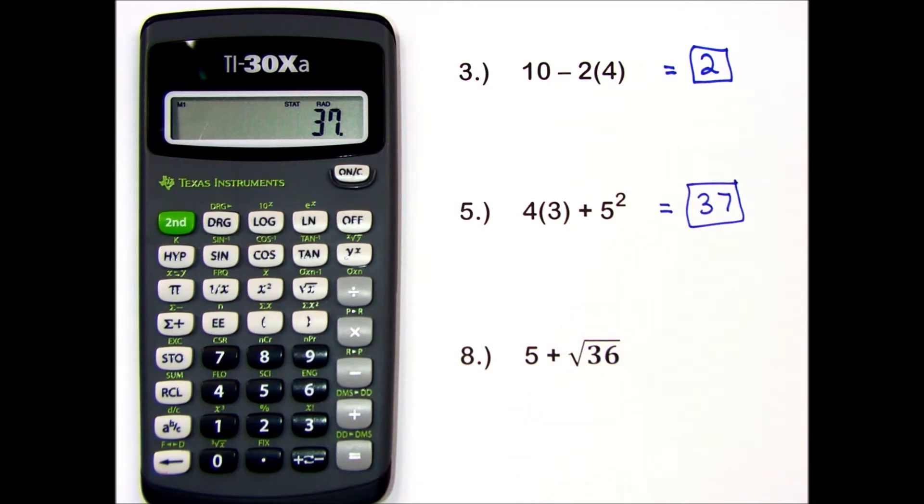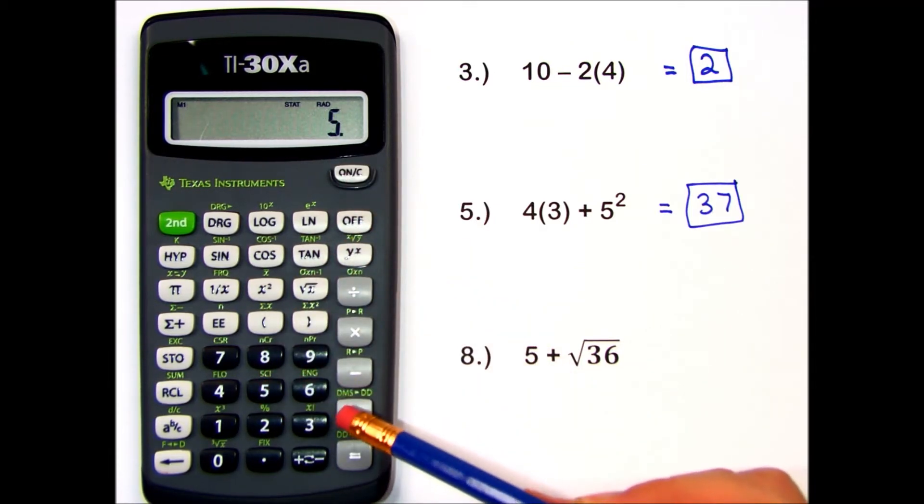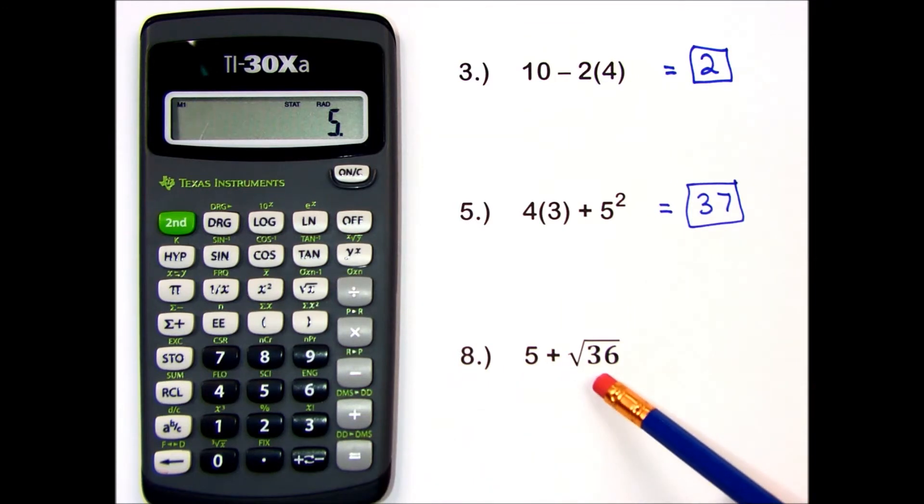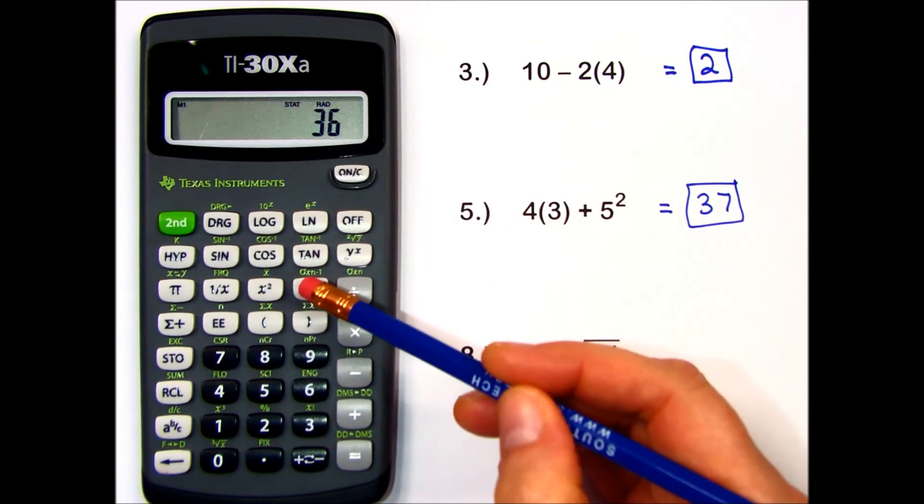And one more, number 8. 5 plus the square root of 36. On this calculator, recall that I press the radicand, the number first, and then the square root button.